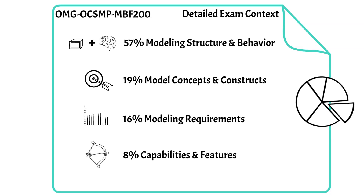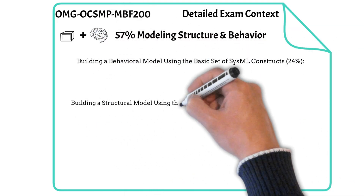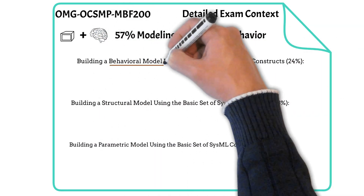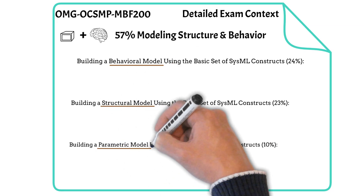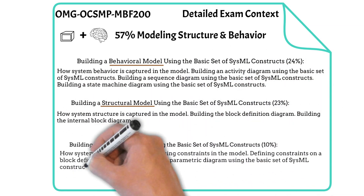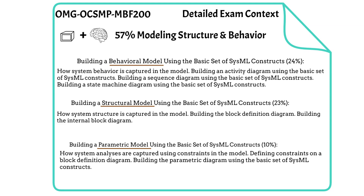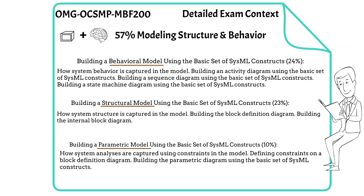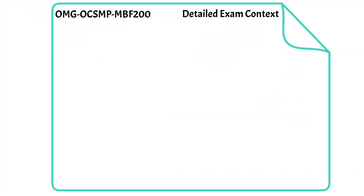Within modeling structure and behavior: 24% is behavioral modeling, 23% is structural modeling, and 10% is parametric modeling. Questions are more conceptual — for example, after creating a block definition decomposition, you'd be asked how to create connections between parts, and the answer would be creating an internal block diagram. A common question format is: given this diagram, what would you do next? with options A, B, C, D.